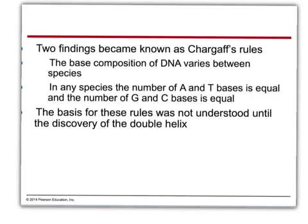Chargaff came up with two rules. First, the base composition varies between species — there's a different variety of nucleotides between species. But in any given species, the number of adenine and thymine bases is equal, and the number of guanine and cytosine bases is equal. The reason for that is because they pair together — cytosine binds guanine, adenine binds thymine. If they require base pairing, they would be in equal numbers.